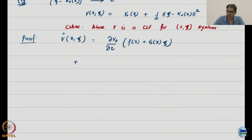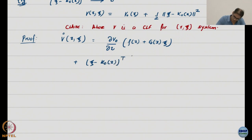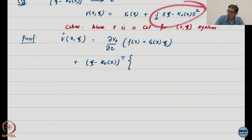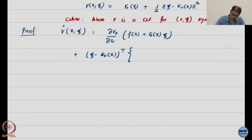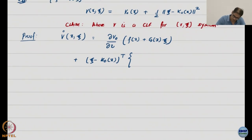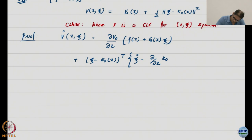Now I take the partial of the second term. This gives me (ξ − K₀(x))ᵀ. I am assuming this is the Euclidean 2-norm, so this is just (ξ − K₀)ᵀ(ξ − K₀). Taking the partial with respect to ξ using standard multivariable calculus, I get a contribution involving ξ̇ minus the partial of K₀ with respect to x times ẋ.